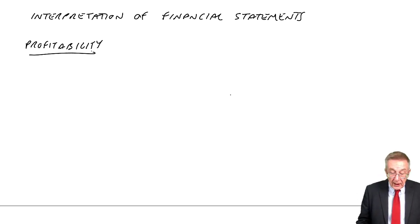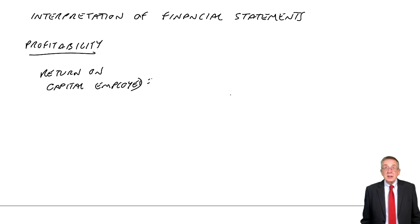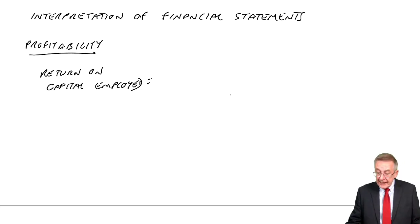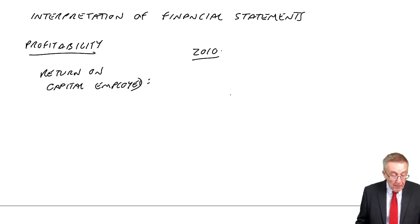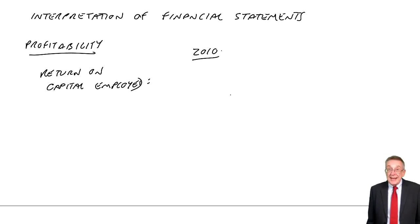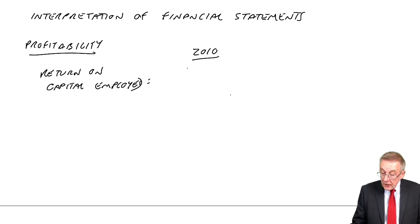The most important one of all, the first one, is the return on capital employed. It's more important to explain what figures we're using and where they come from. You'll see we take the profit before interest and tax. For 2010, the profit before interest and tax is the profit from operations. If you look at 2010, profit from operations is 1,896. They've then subtracted finance costs, which is another word for interest, giving 1,776. Then they've subtracted the tax, 629. We always look here at the profit before interest and tax, or the profit from operations.